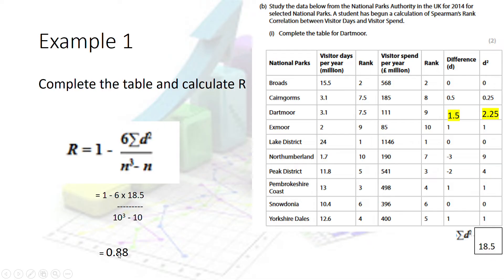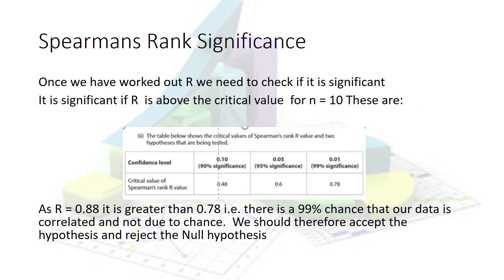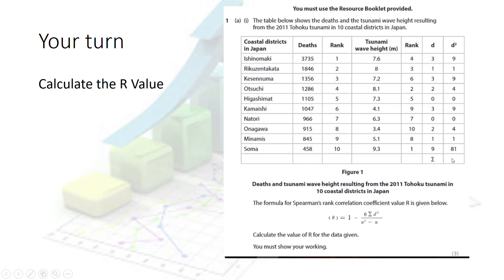A result of 0.88 is a positive number, suggesting a positive correlation — and one would be a perfect positive correlation. Comparing to the critical values table, 0.88 is greater than 0.78, which tells us there is more than a 99% chance the data is significant and not random. We therefore accept the hypothesis and reject the null hypothesis. Now pause the video and try the next example yourself — you only need to calculate Σd² and substitute it in.